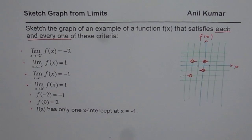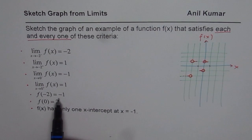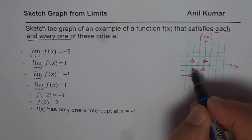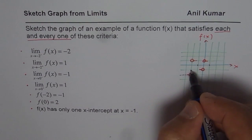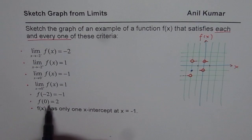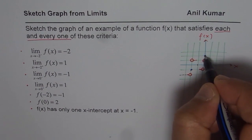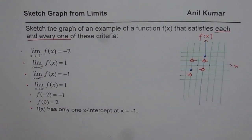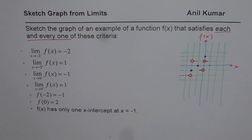Now let me sketch the actual values of the function at these points. At x = -2, f(-2) = -1, so I place a filled circle at (-2, -1). At x = 0, the value is 2, so I place a filled circle at (0, 2). These filled circles are the real values of the function. Also, f(x) has only one x-intercept at x = -1, so that is also a filled solid point at (-1, 0).